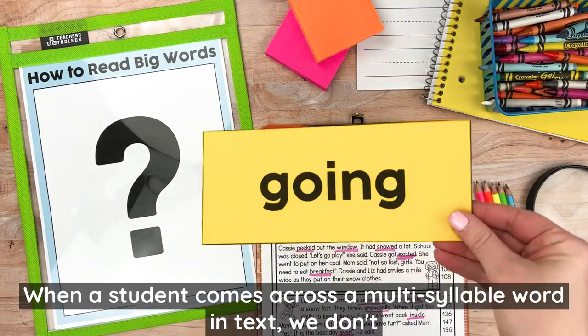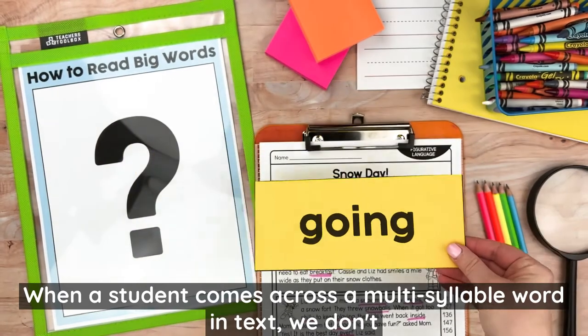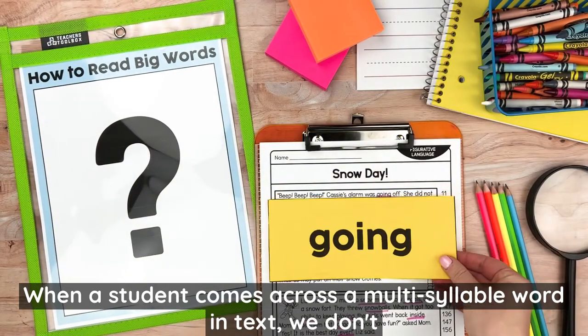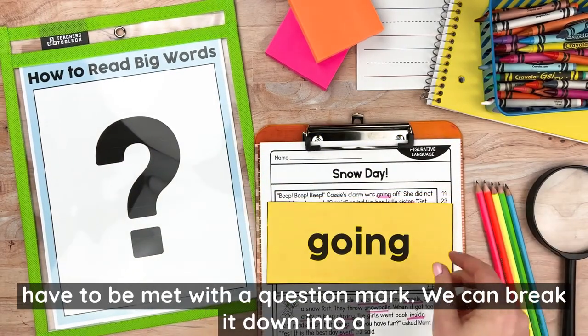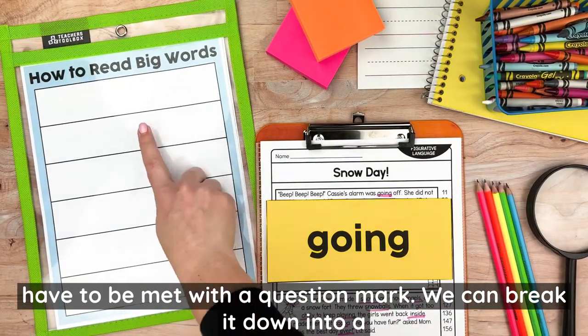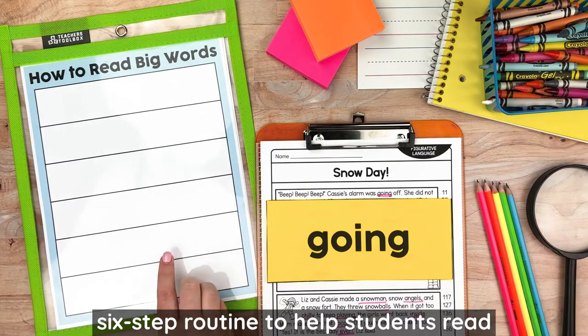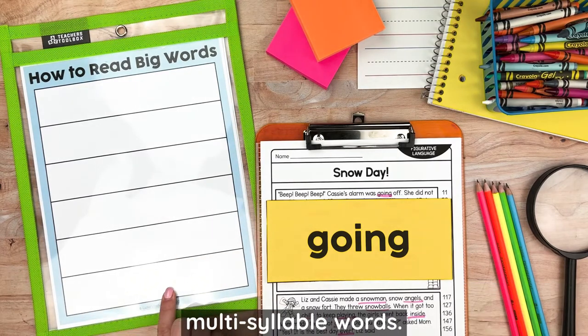When a student comes across a multi-syllable word in text, we don't have to be met with a question mark. We can break it down into a six-step routine to help students read multi-syllable words.